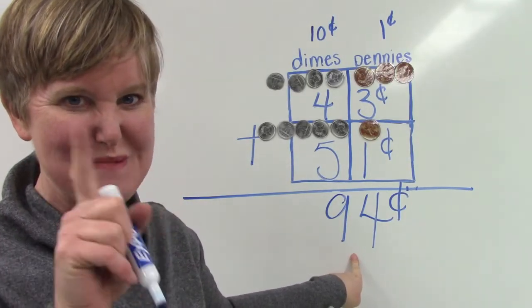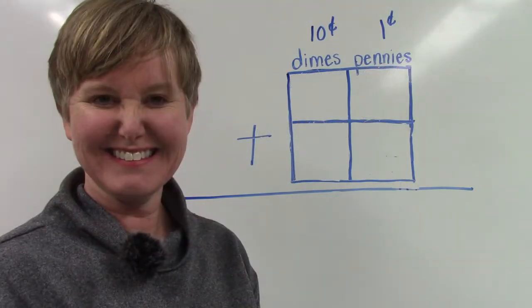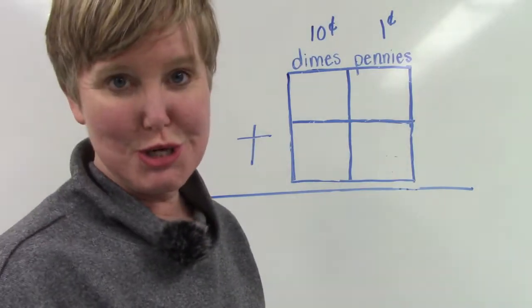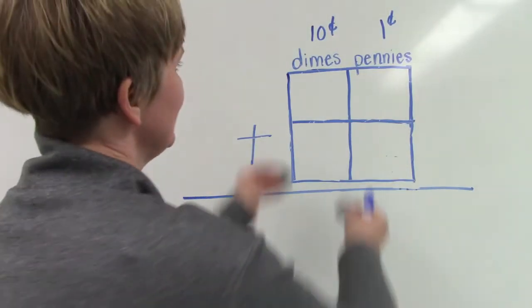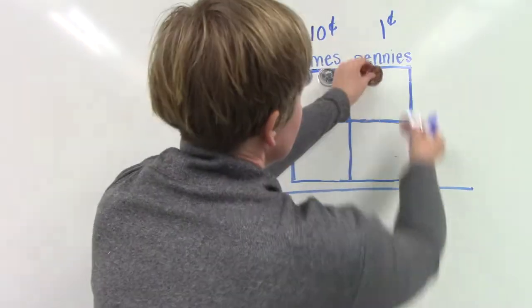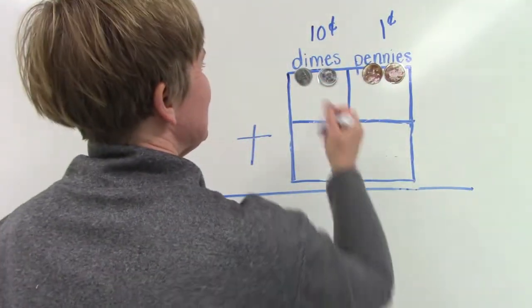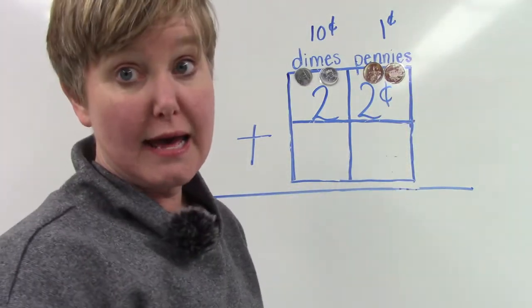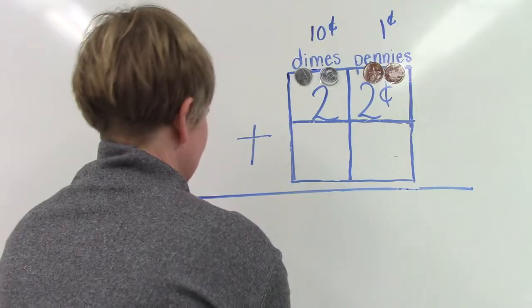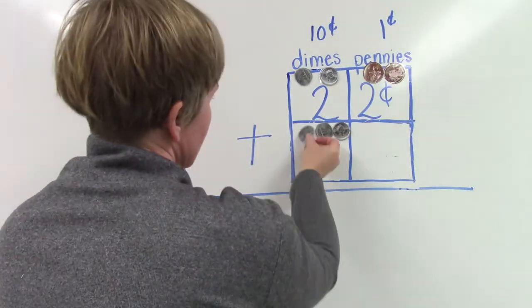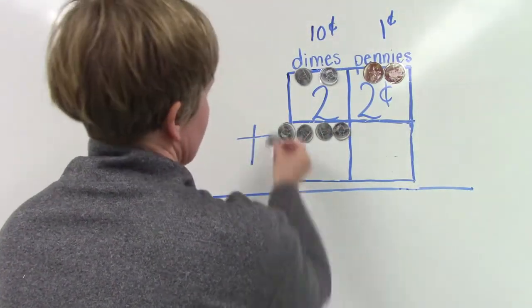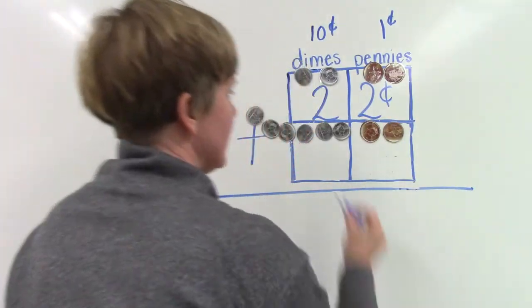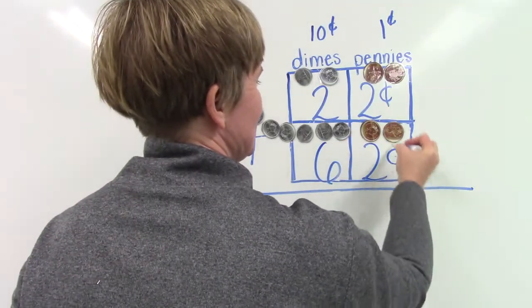Are you ready for one more practice? Let's try. Now we are going to be adding 22 plus 62. 10, 20, 21, 22. So we have 22 cents. And we're going to add 62 to that. 10, 20, 30, 40, 50, 60, two. 22 plus 62 cents.